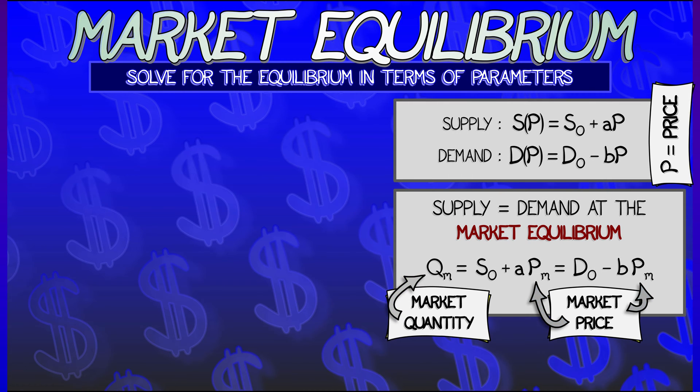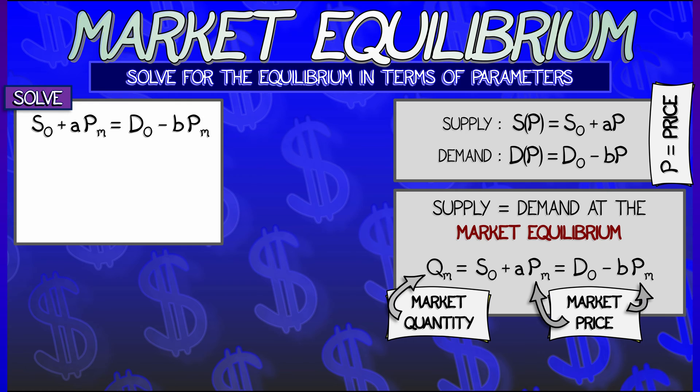Okay, well first, let's reduce this down to a function. If I set the supply and demand functions equal to each other, and then solve for the market price, solve for p-sub-m...